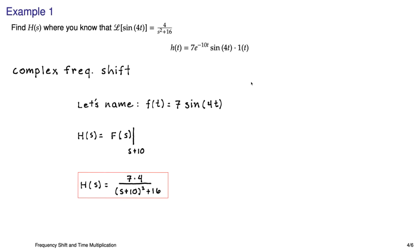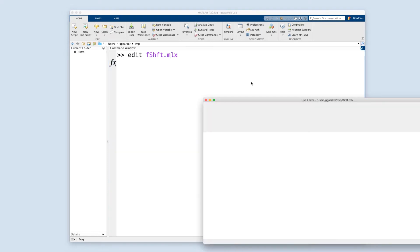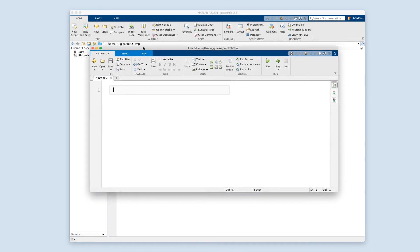So let's swing over to MATLAB and have a look at this. The first thing I'll do is fire up a blank LiveScript file. Let me get that centered a little bit. And we're going to do this all symbolically. So I'll create a couple of symbolic variables that we need, s and t.